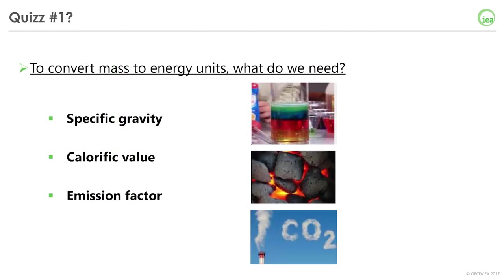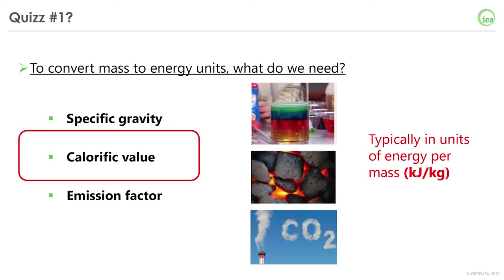Here is a question for you: do you know what value we need to go from energy product statistics to energy balances, or in other words, to convert mass to an energy unit? Is it the specific gravity, the calorific value, or the emission factor? The correct answer is the calorific value of each energy product. Calorific values are typically expressed in units of energy per mass — for example, kilojoules per kilogram — and they can vary between energy products, between countries, between flows, and even over time.